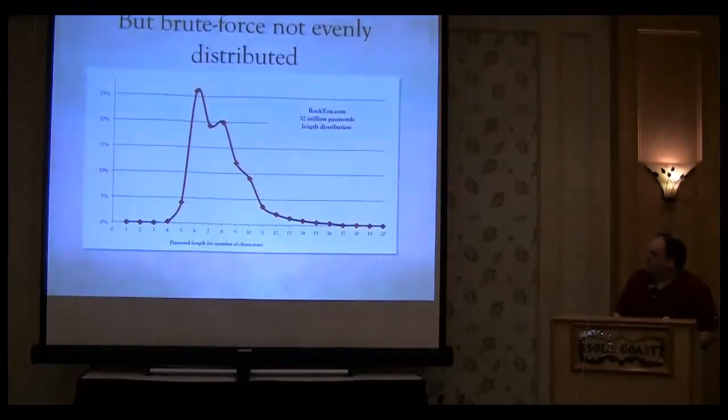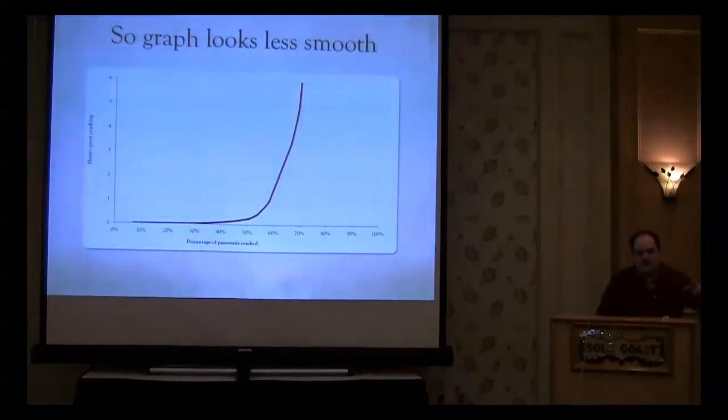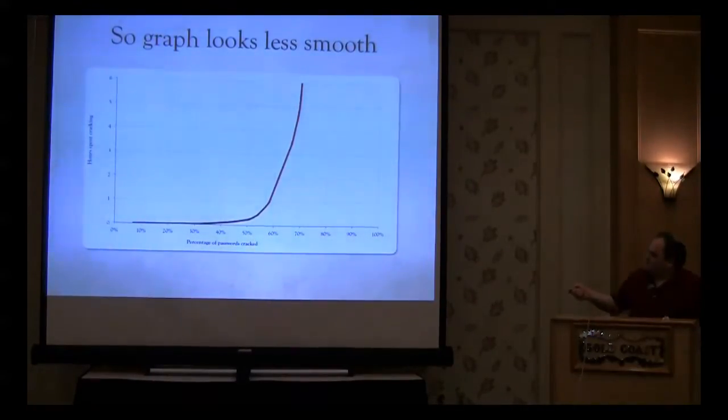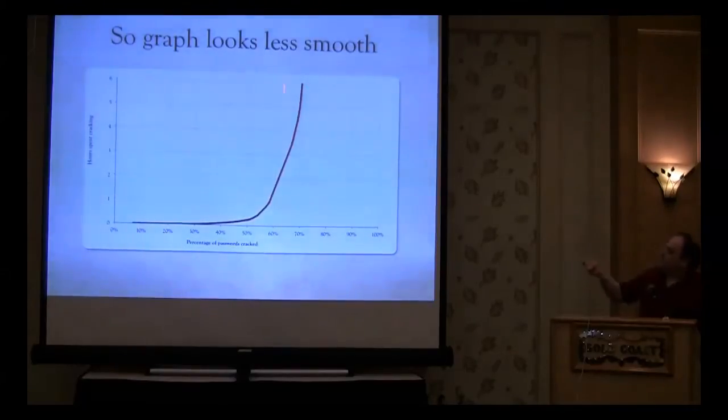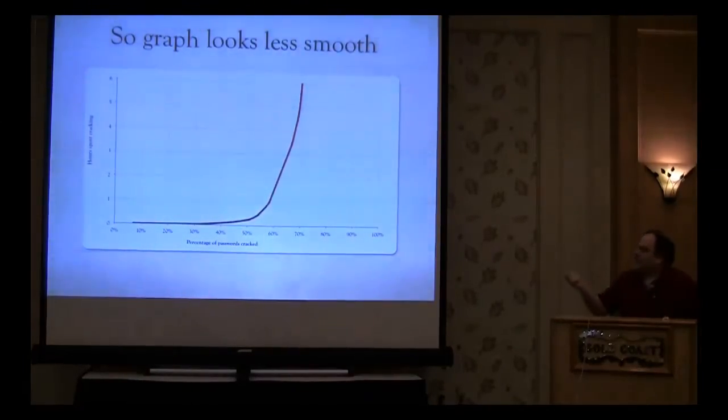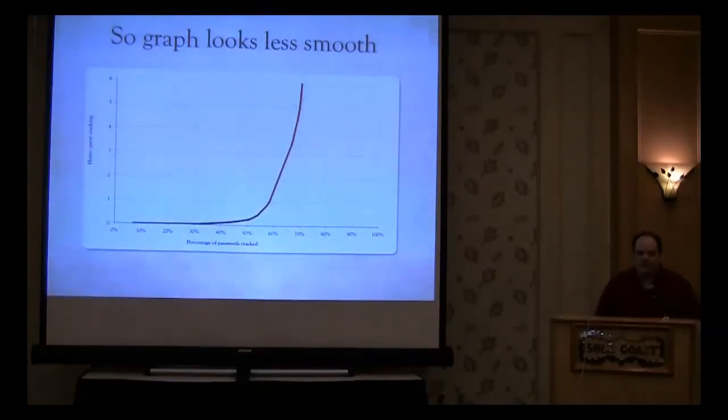And that's where added GPUs will help or added Amazon power will help. Is if I'm sort of here on the graph, getting a lot more power gets me over here. But if I'm already over here where the line is sort of going straight up almost, if I'm here, no GPUs will help me. No Amazon clusters will help me. I'm at the brute force point. But down here, I'm sort of at the smart point where I'm doing things more intelligently and GPU will help.